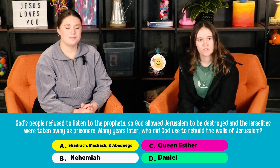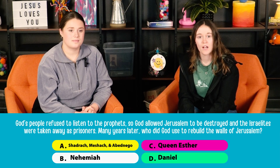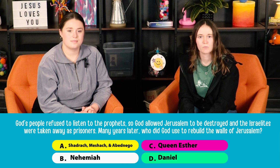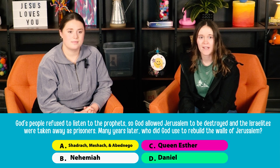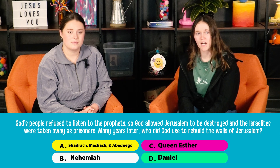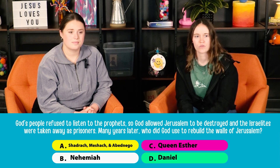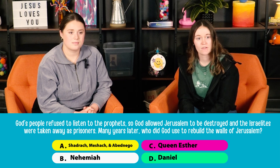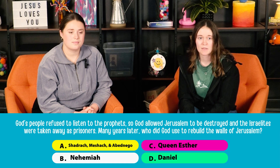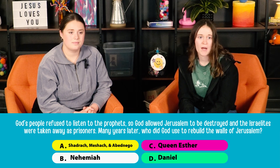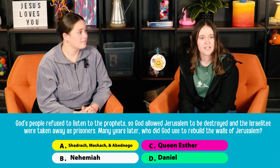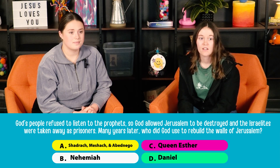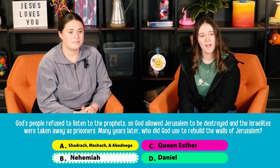God's people refused to listen to the prophets, so God allowed Jerusalem to be destroyed and the Israelites were taken away as prisoners. Many years later, who did God use to rebuild the walls of Jerusalem? A: Shadrach, Meshach, and Abednego. B: Nehemiah. C: Queen Esther. Or D: Daniel. The correct answer is B — Nehemiah.